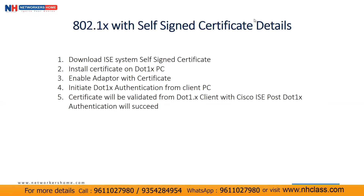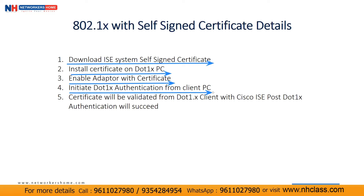Here we'll first understand what steps we need to follow. First, we need to download the Cisco ISE self-signed certificate. Then we need to install the certificate on the 802.1x PC, enable the adapter with the certificate, initiate 802.1x authentication from the client PC, and then the certificate will be validated from the 802.1x client with Cisco ISE. After that, 802.1x authentication will succeed.